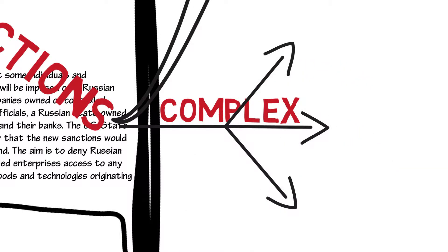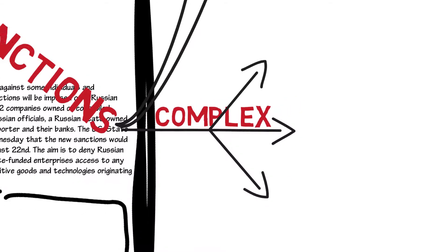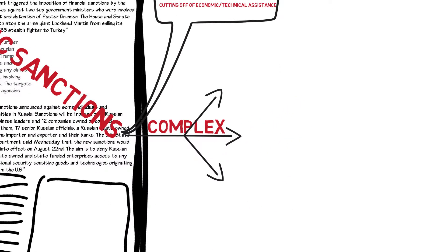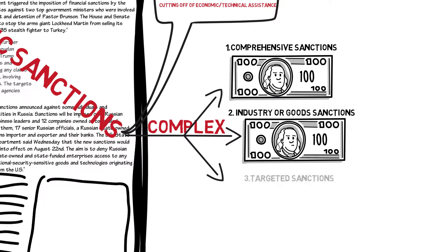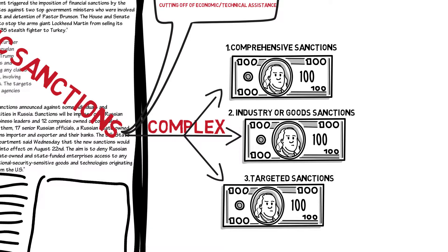In general, we can refer to three types of sanctions. American economic sanctions can be broadly defined and divided into comprehensive, industry and goods, and targeted sanctions. Let us now take a deeper look into the characteristics of these three types of sanctions.